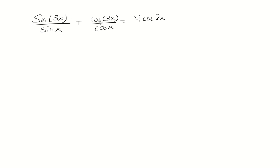Notice on the left side we have two fractions, so why don't we combine them. We'll do that by multiplying the first fraction by cosine over cosine, and the second fraction by sine over sine.